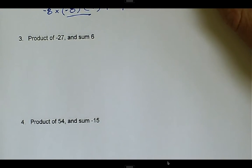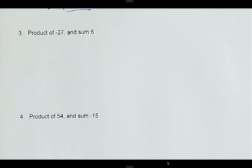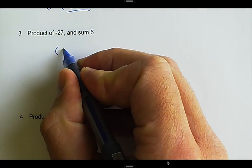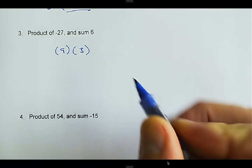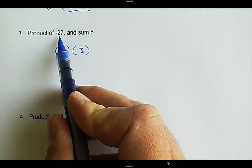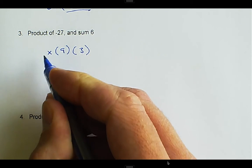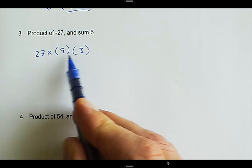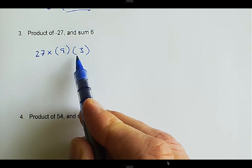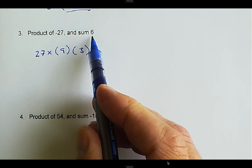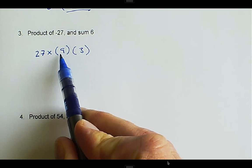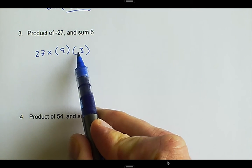We can also take a look at number 3 here. Two numbers that multiply to negative 27. We should be thinking right off the bat, negative 27 is going to be 9 times 3. 9 times 3 is going to get me 27. Now, the thing that we have to pay attention to is we want it to be negative 27. In order to be negative 27, we have to have one of these numbers be negative. But remember, we want it to add to 6. If I make negative 9, that will give me negative 27, but negative 9 plus 3 will give me a negative 6.